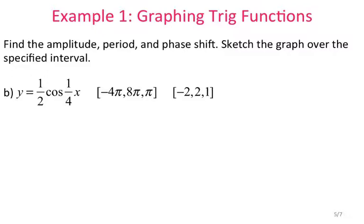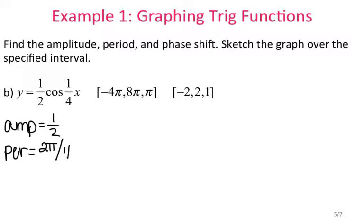Let's do another one: y equals one-half cosine of one-fourth x. The amplitude is one-half. The period is 2 pi divided by one-fourth, which is going to be 8 pi. And the phase shift, since we're not adding anything to x, is 0.